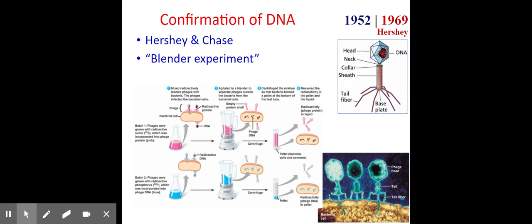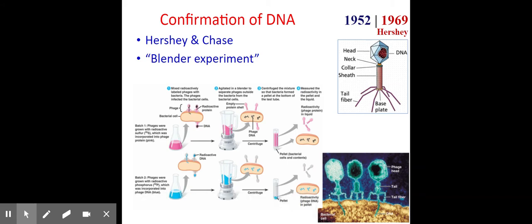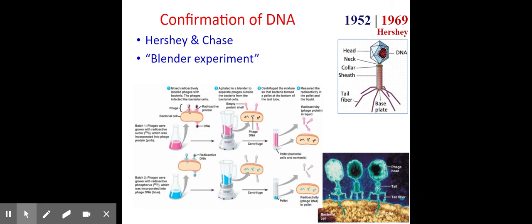Other experiments were done to confirm that DNA was the transforming material. Viruses called bacteriophages infect bacteria — they have a strange structure, almost like an alien spaceship or spider. Scientists named Hershey and Chase performed what's called the blender experiment, a famous experiment that helped confirm that DNA was the transforming principle these bacteriophages were using to infect bacteria.